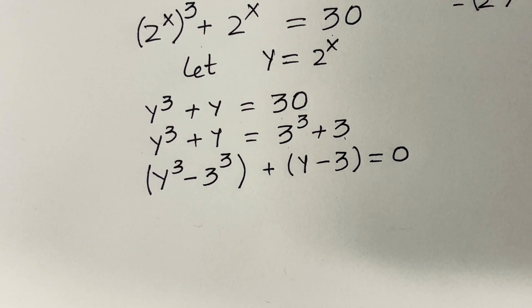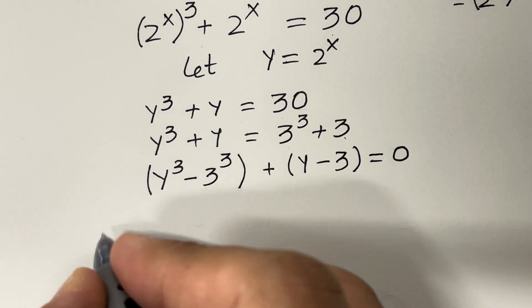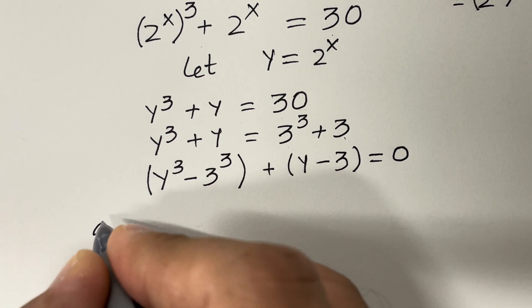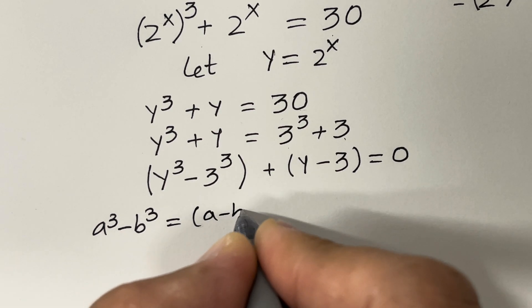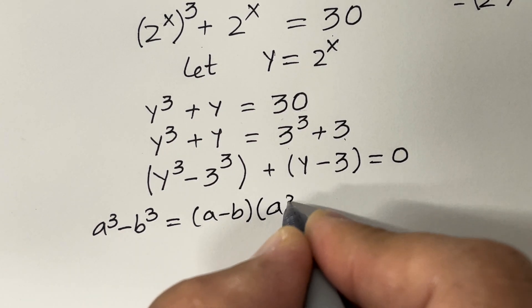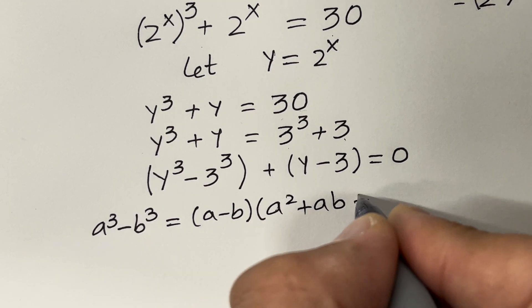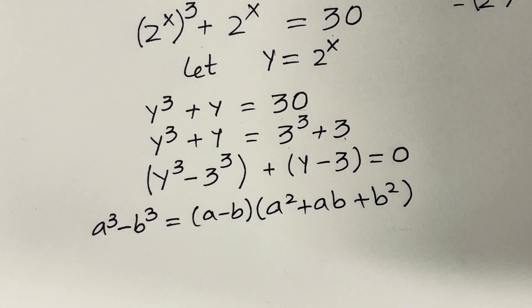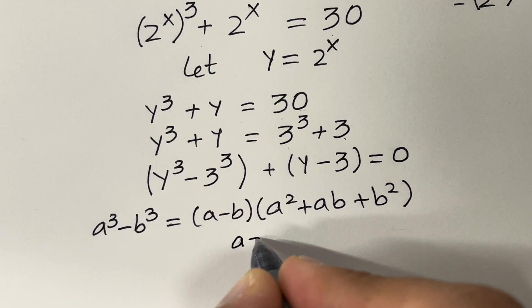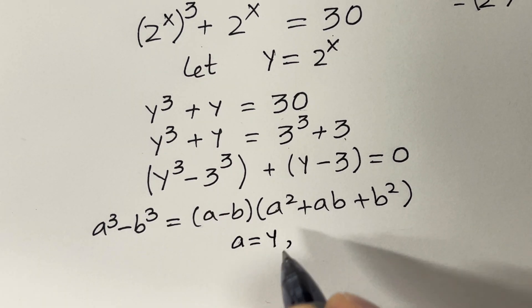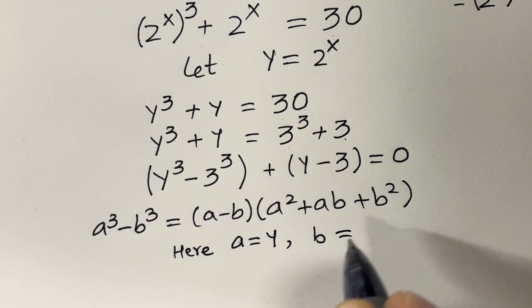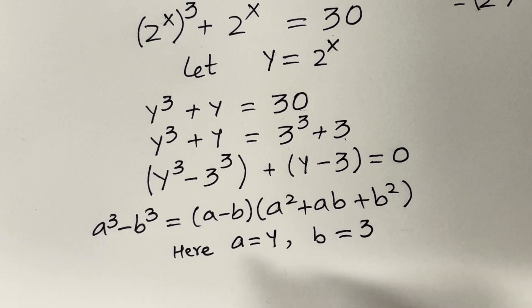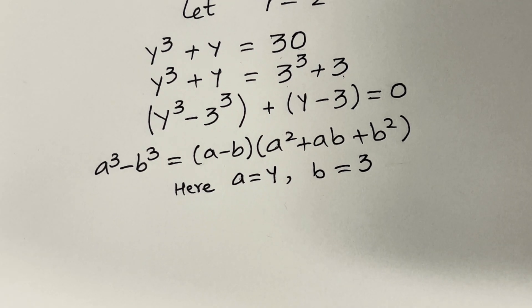Now recall the formula: a cubed minus b cubed equals (a minus b)(a squared plus ab plus b squared). Here we use a equals y and b equals 3. So let's apply this formula.